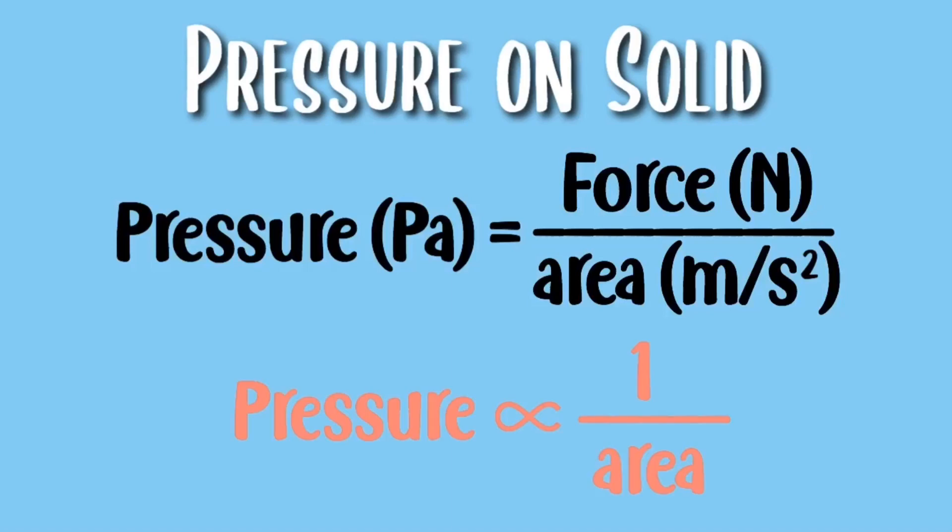So the pressure on solid is inversely proportional to the area. This means a larger area has a lower pressure and a lower area has a higher pressure.